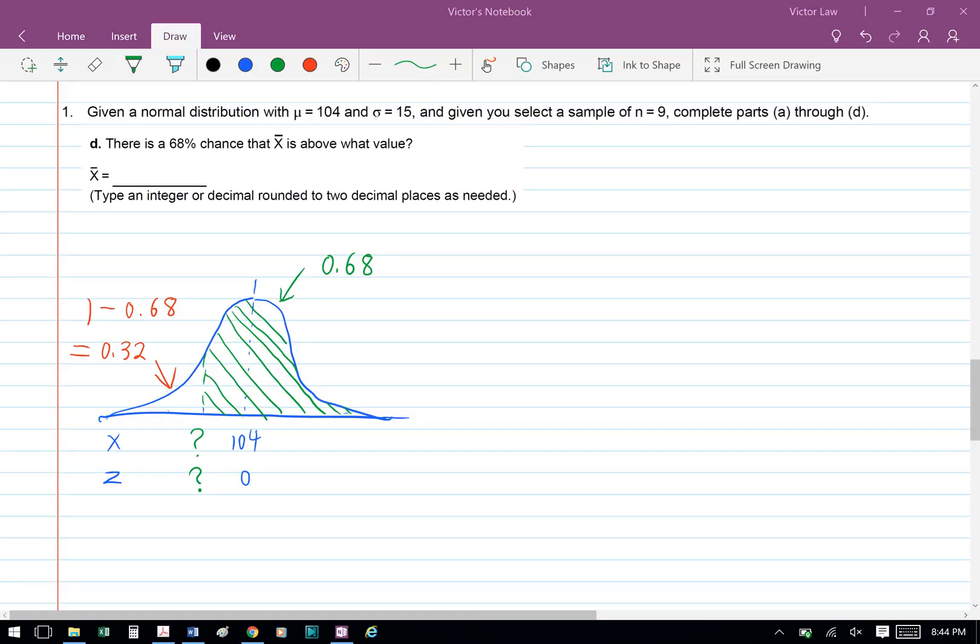Part D, there is a 68% chance that x bar is above what value. So 68% above means that we have 0.32 below. First we need to find the z value and then we can find the x value.